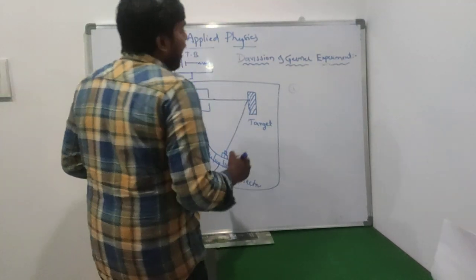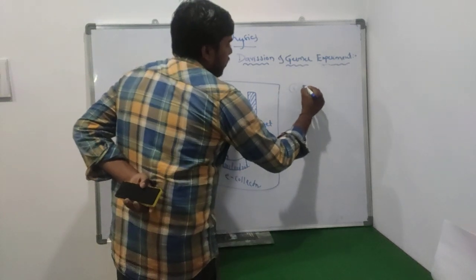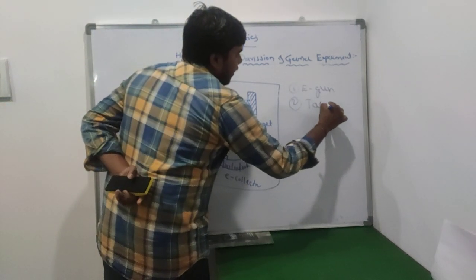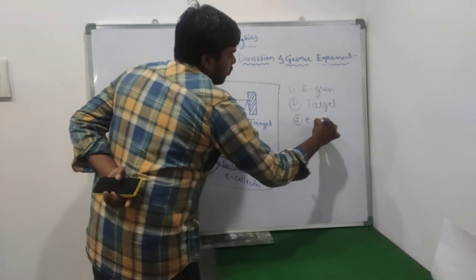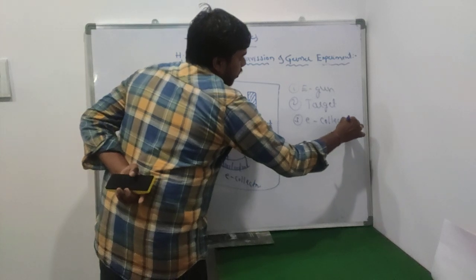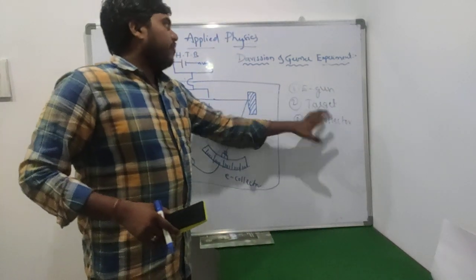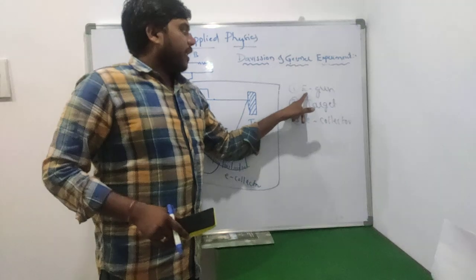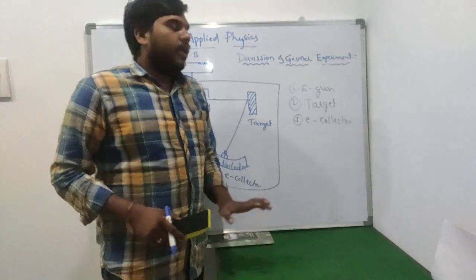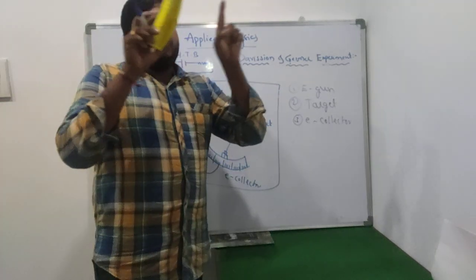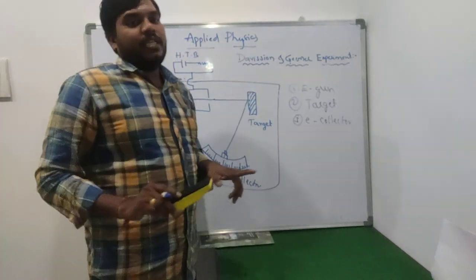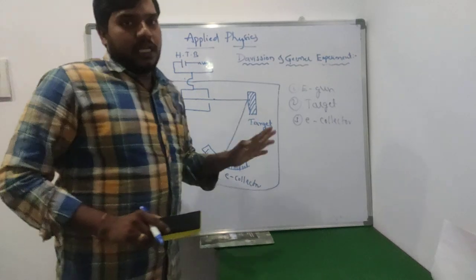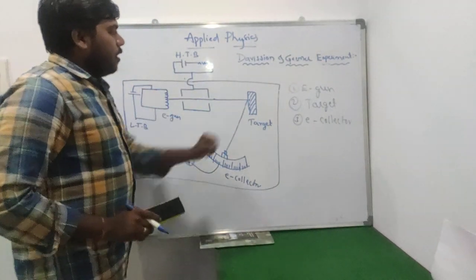For this experiment we need three instruments: the first one is the electron gun, the second one is the target, and the third one is the electron collector. These three instruments are placed inside a vacuum or glass tube.